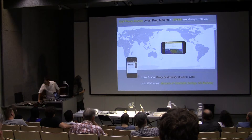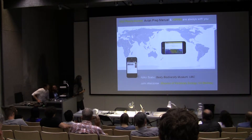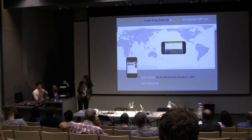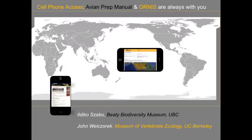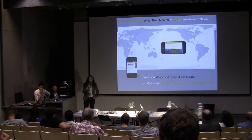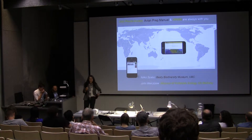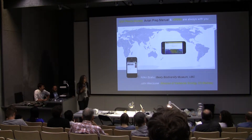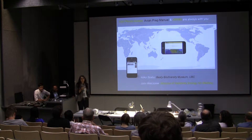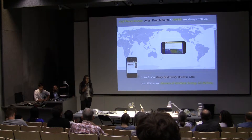This is a joint talk. To jump right into it: cell phone access. For most of the people in this room, we all know there are great textbooks and papers on how to do avian preparations of different types, but for the upcoming generation, if it isn't on your cell phone, maybe it doesn't exist.